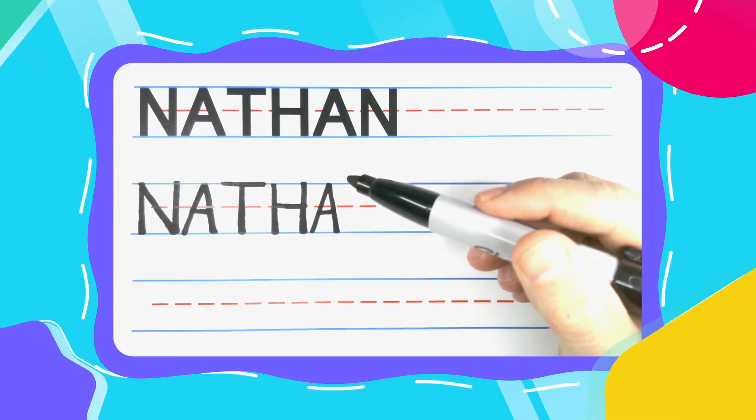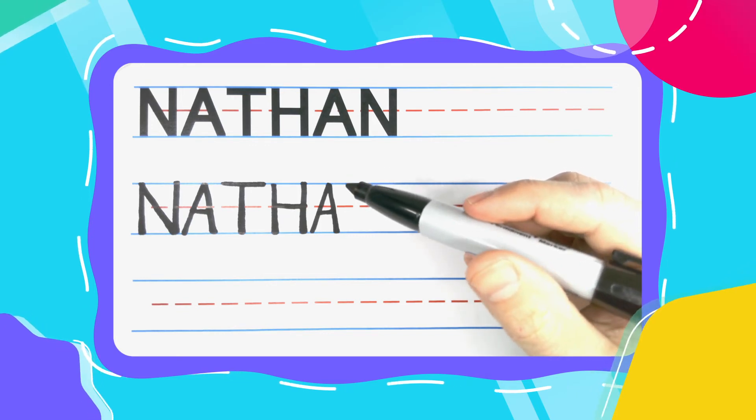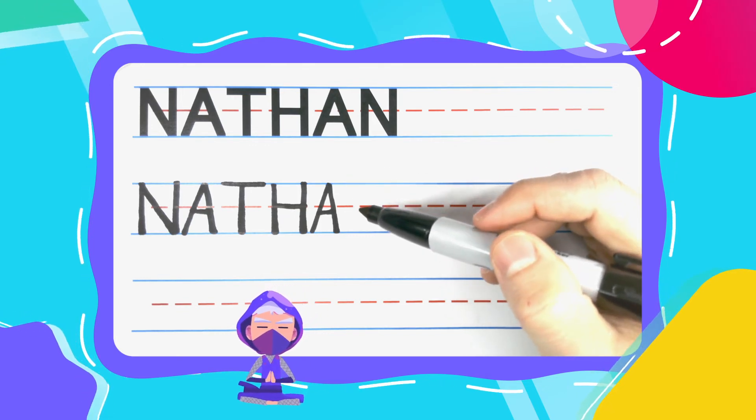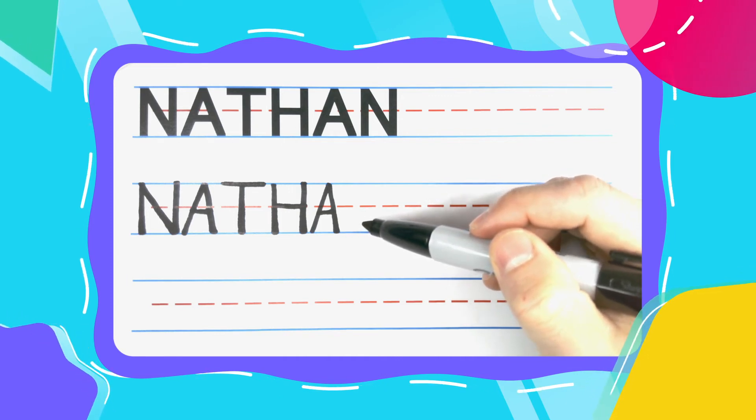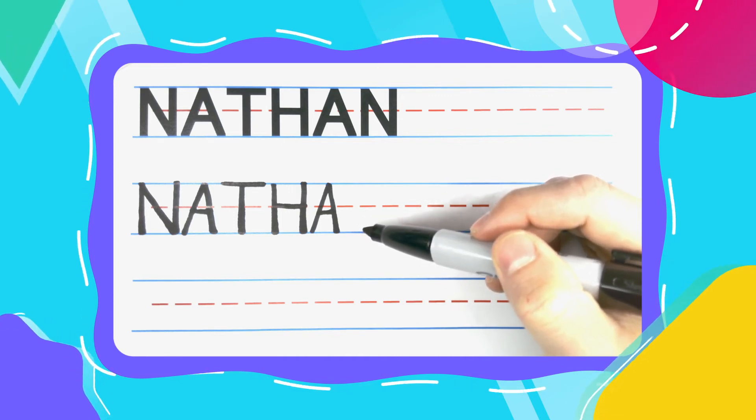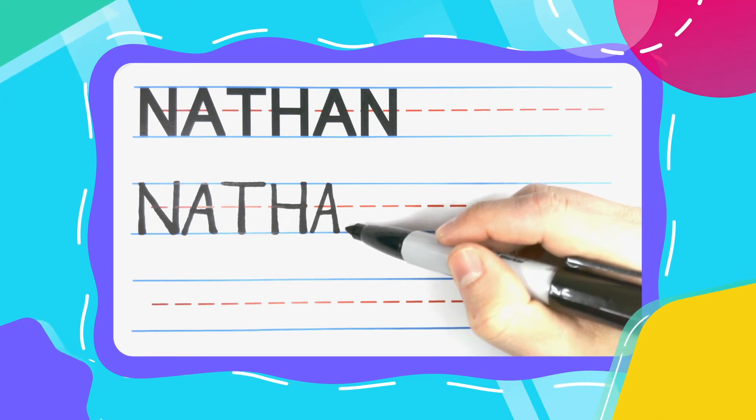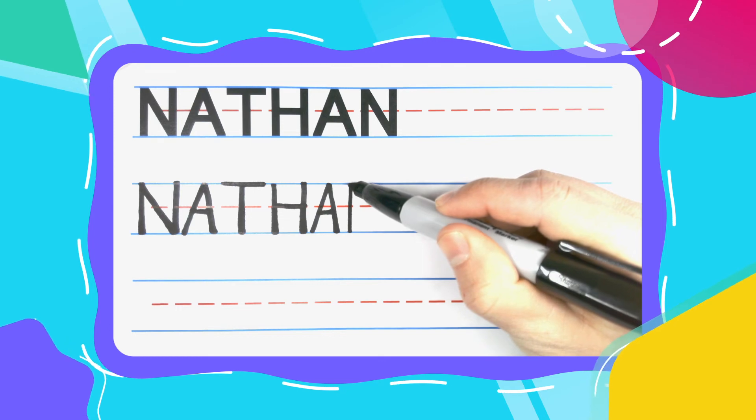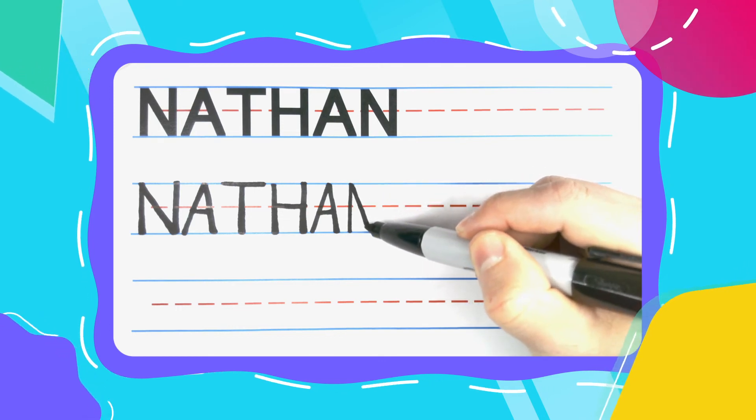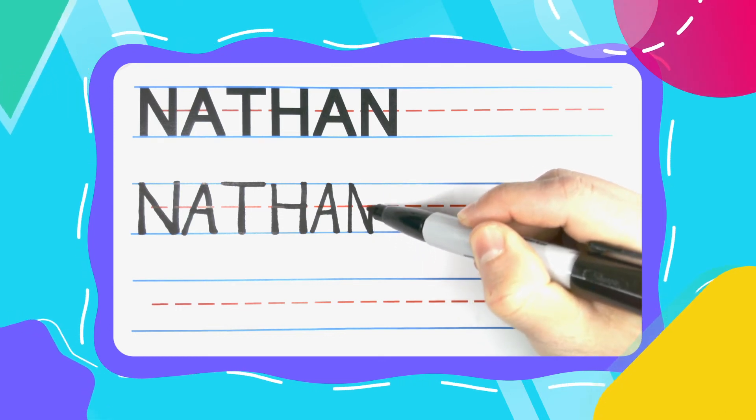The last letter in Nathan is another N. We're going to do this N a little different than the first one. We're going to do it in a style that I like to call wild style. For a wild style N, start at the bottom, come up to the top. Don't pick up your pen. Diagonal down. Don't pick up your pen. Come straight up.